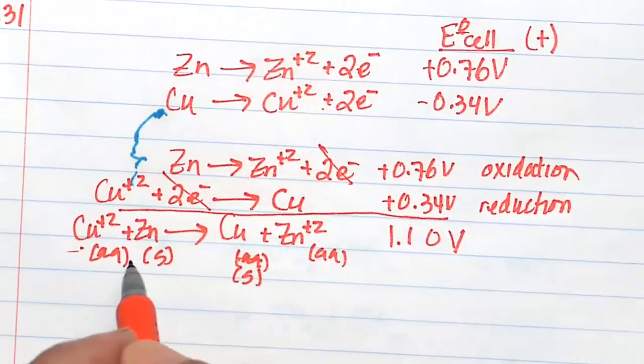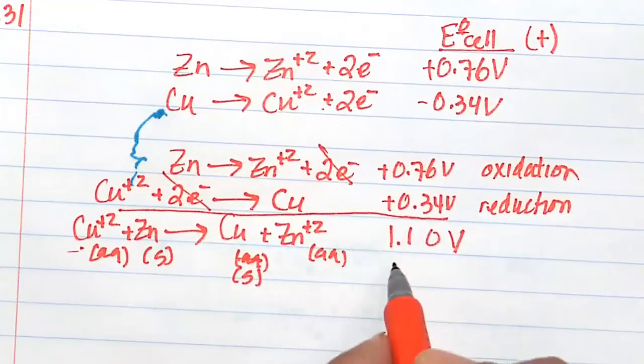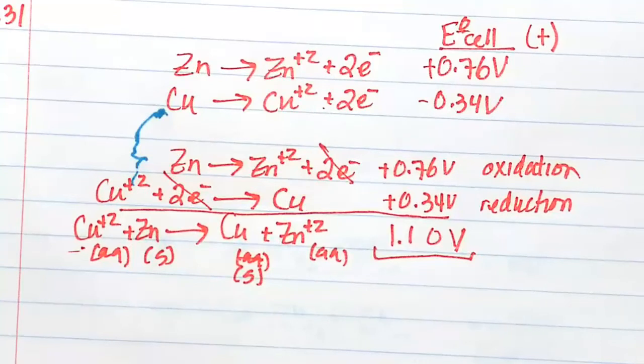Here's the equation: copper aqueous going to copper solid, zinc solid going to zinc plus two, and the corresponding voltage associated with that is 1.10 volts.